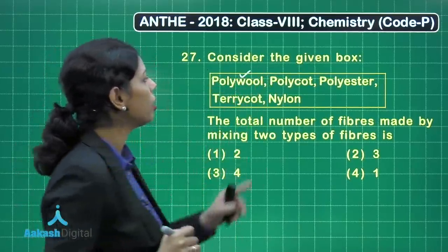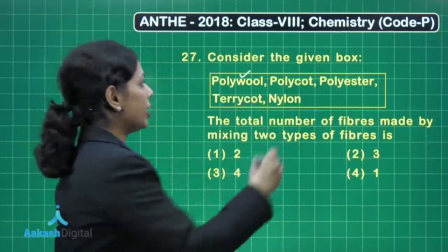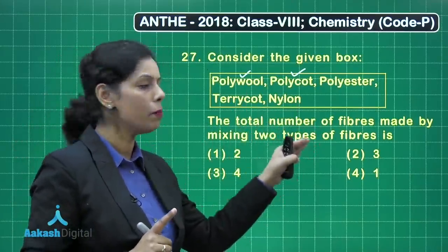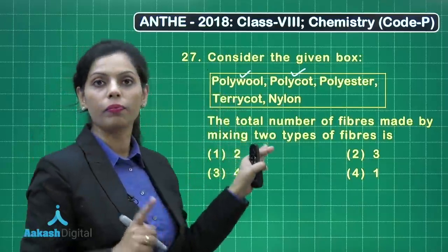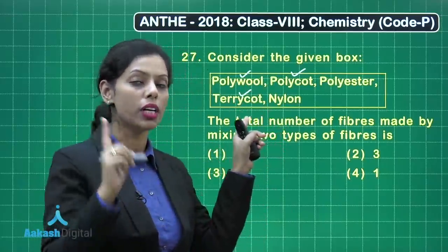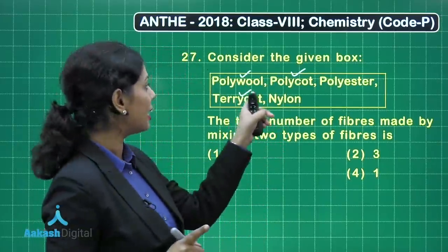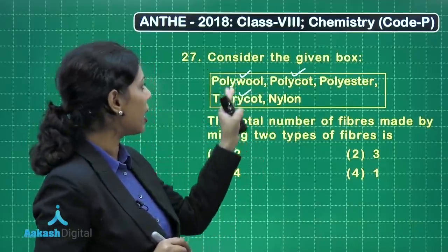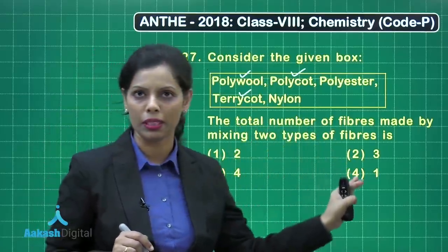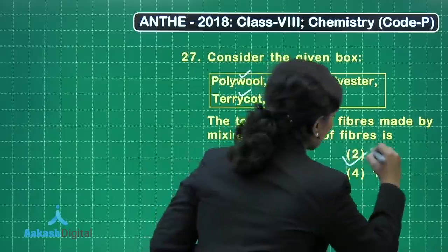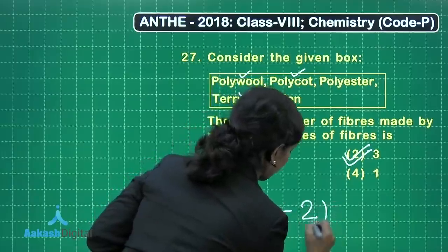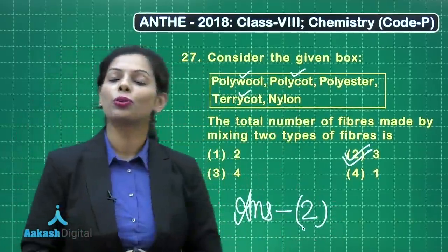Polycott is a mixture of polyester and cotton — also a mixed fiber. Polyester itself is not a mixed fiber; it is a type of polymer. Terricot is formed by mixing terrylene and cotton, so it is a mixed fiber. Nylon is the first fully synthetic fiber and is not a mixed fiber. Therefore, there are three mixed fibers, making option 2 the correct answer.